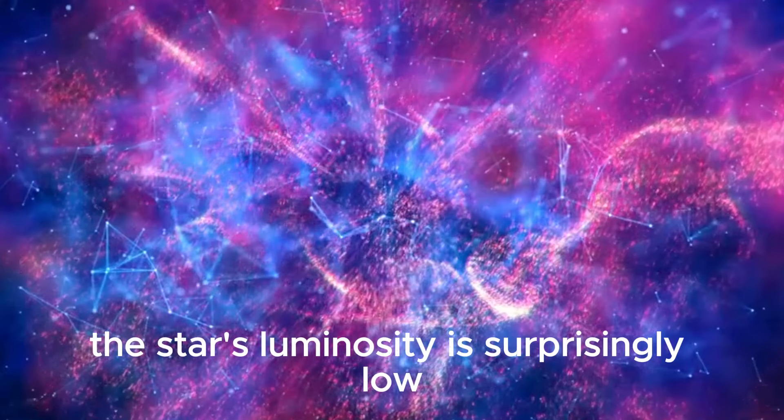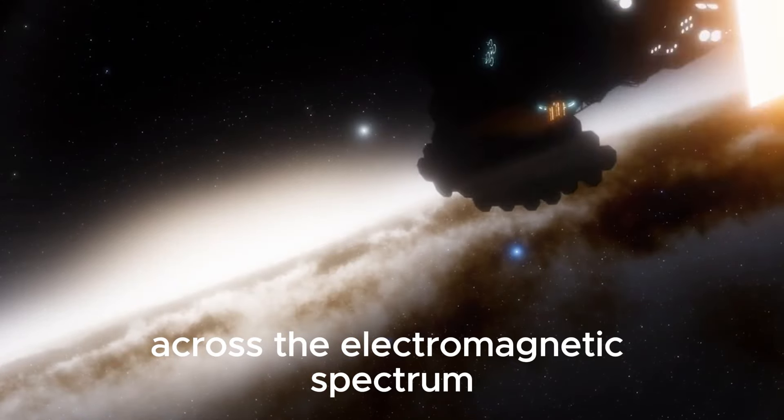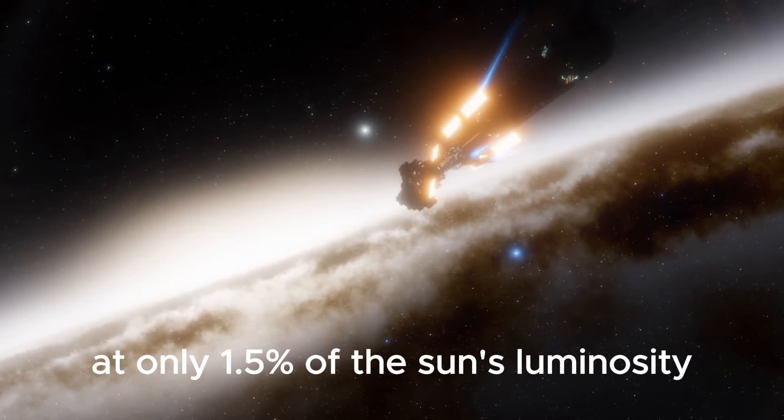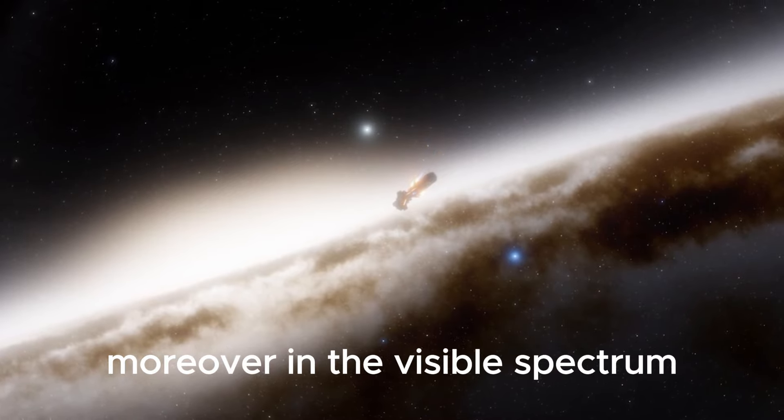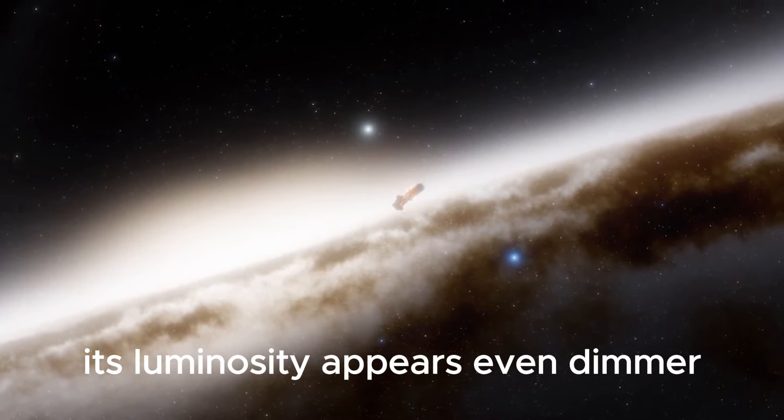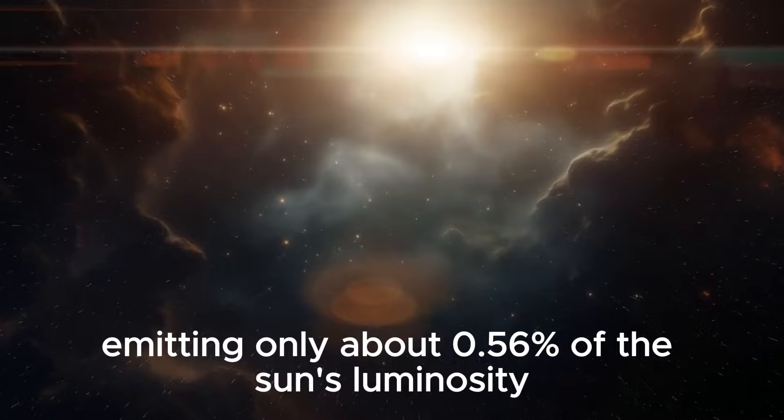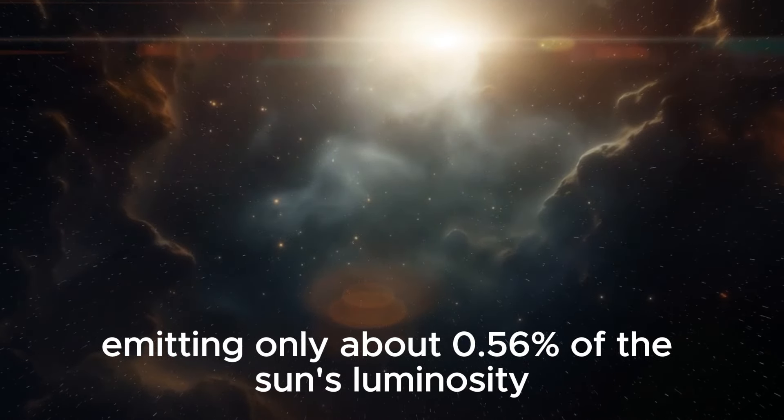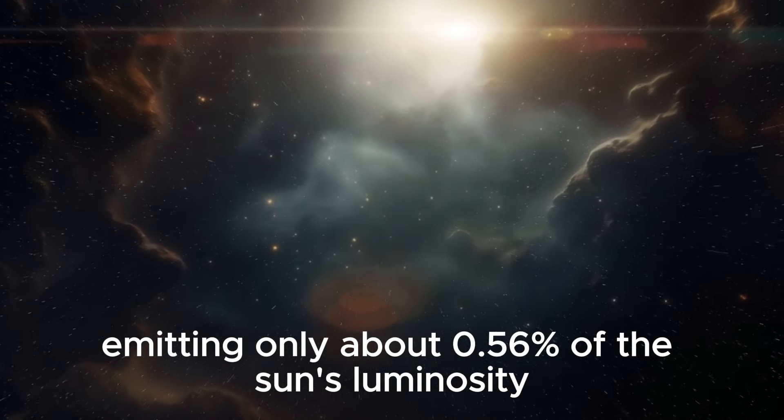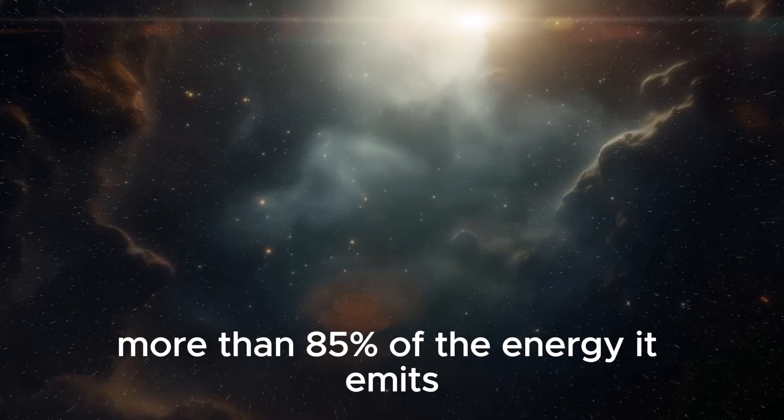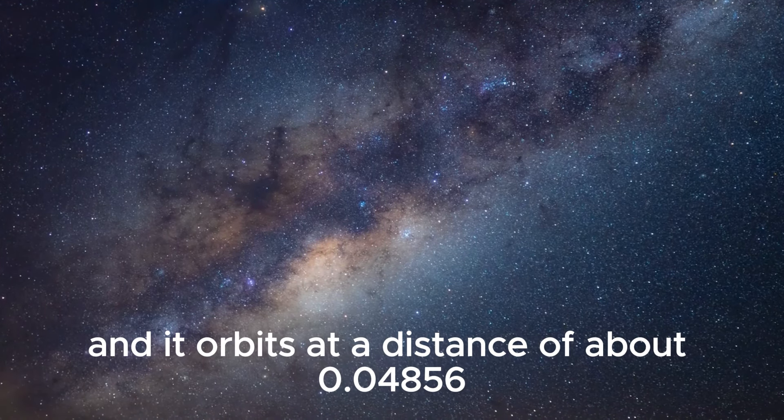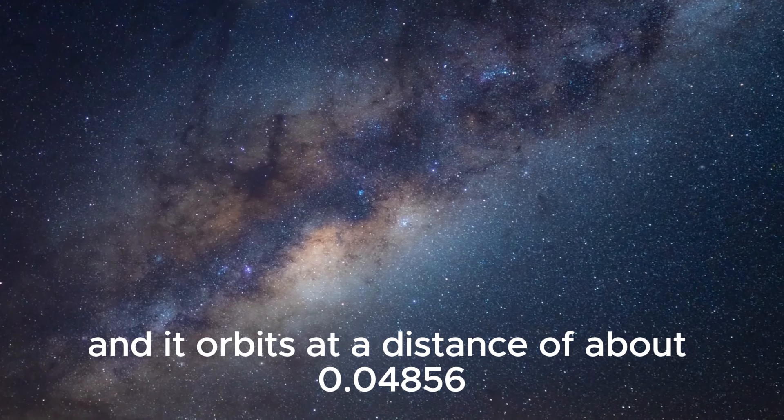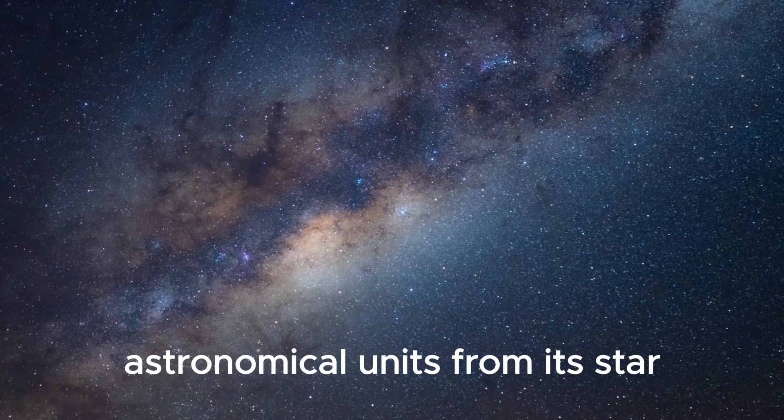The star's luminosity is surprisingly low across the electromagnetic spectrum, at only 1.5% of the Sun's luminosity. Moreover, in the visible spectrum, its luminosity appears even dimmer, emitting only about 0.56% of the Sun's luminosity. More than 85% of the energy it emits is in the form of infrared radiation, and it orbits at a distance of about 0.04856 AU from its star.